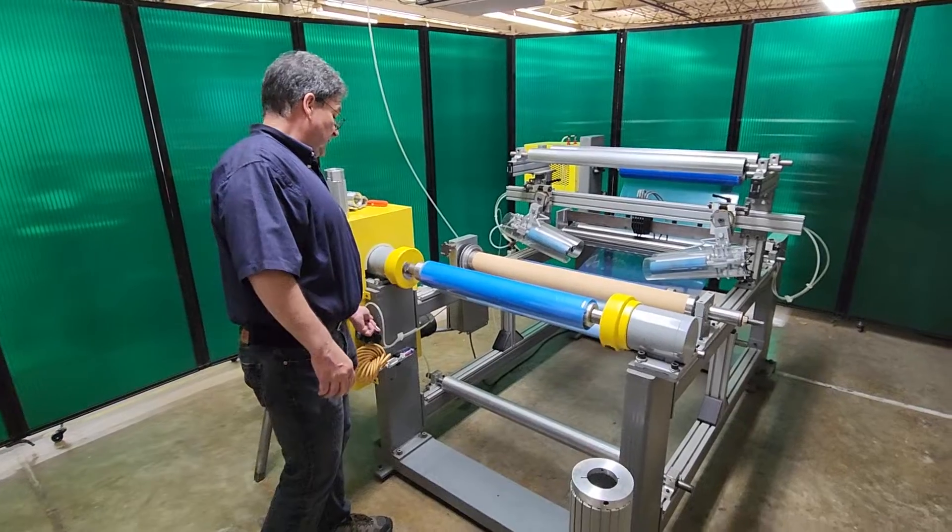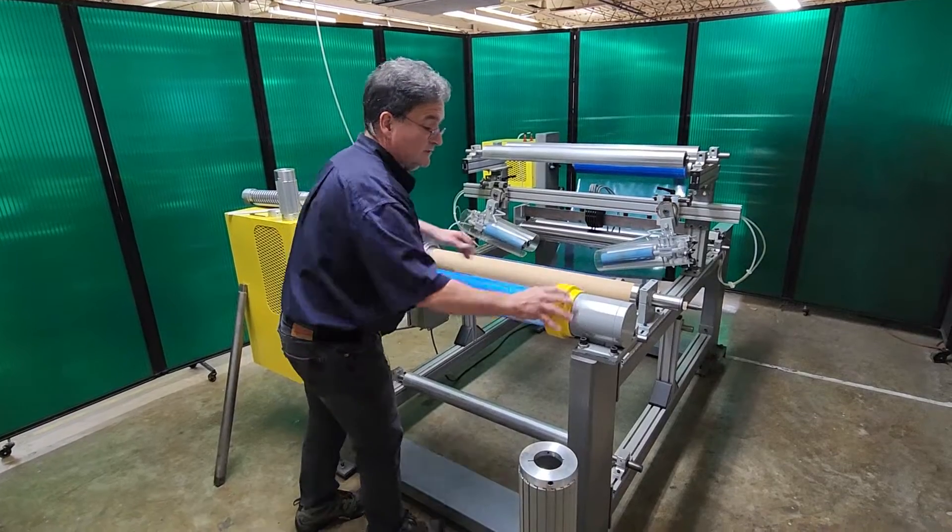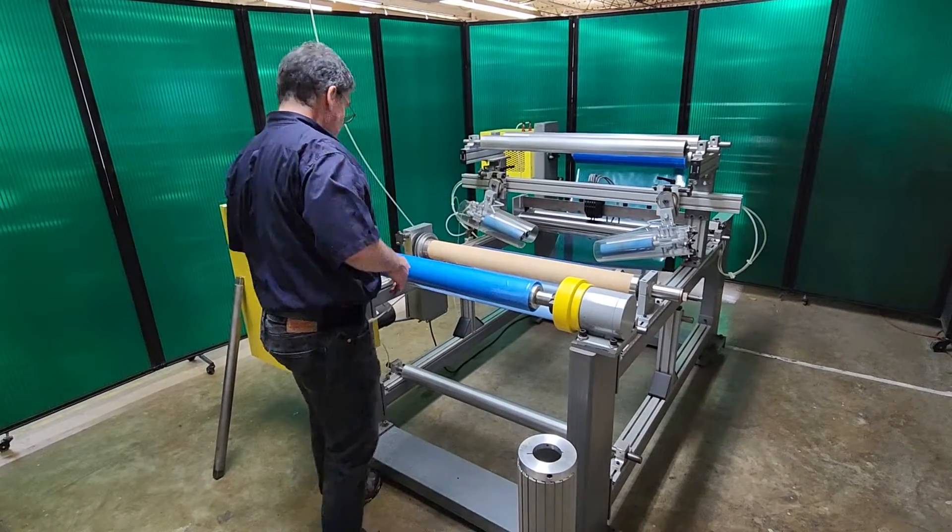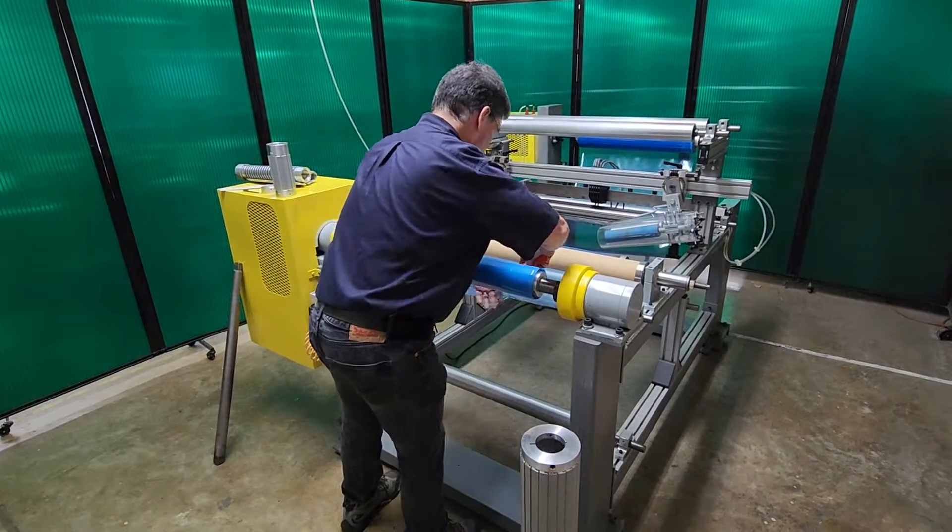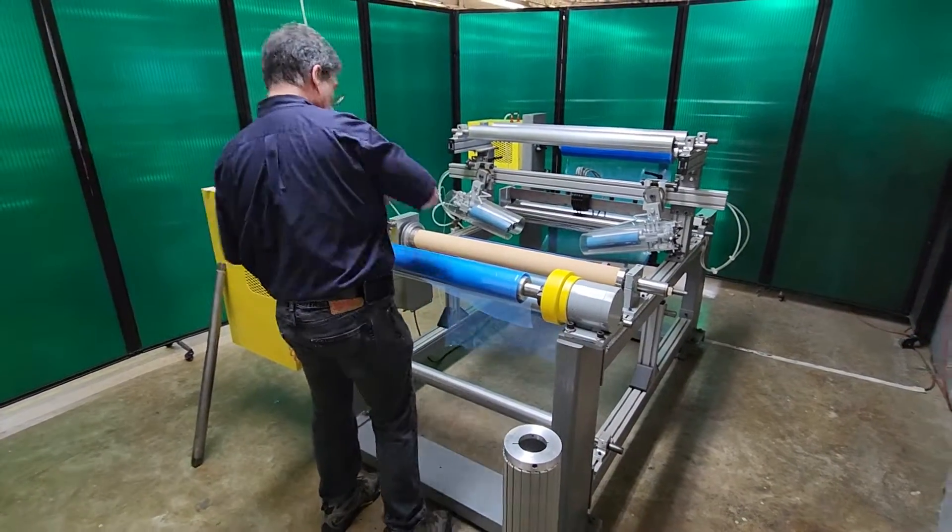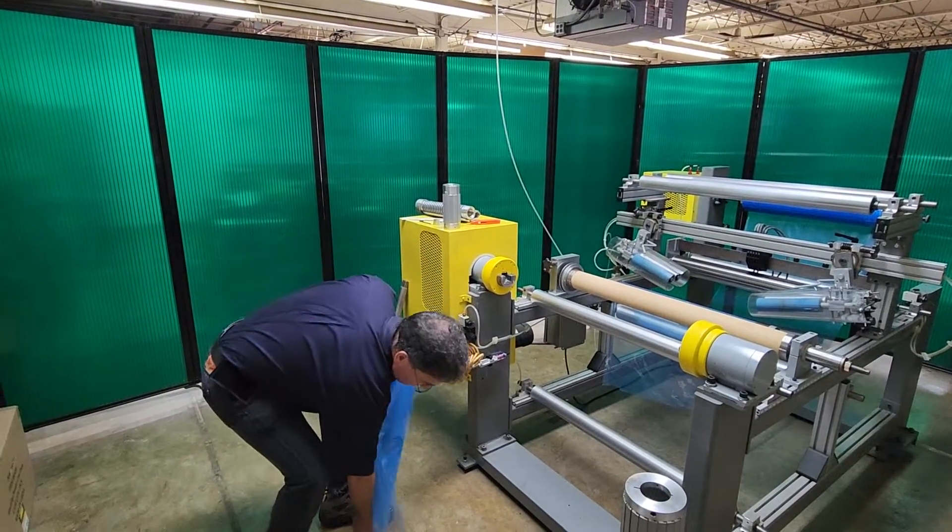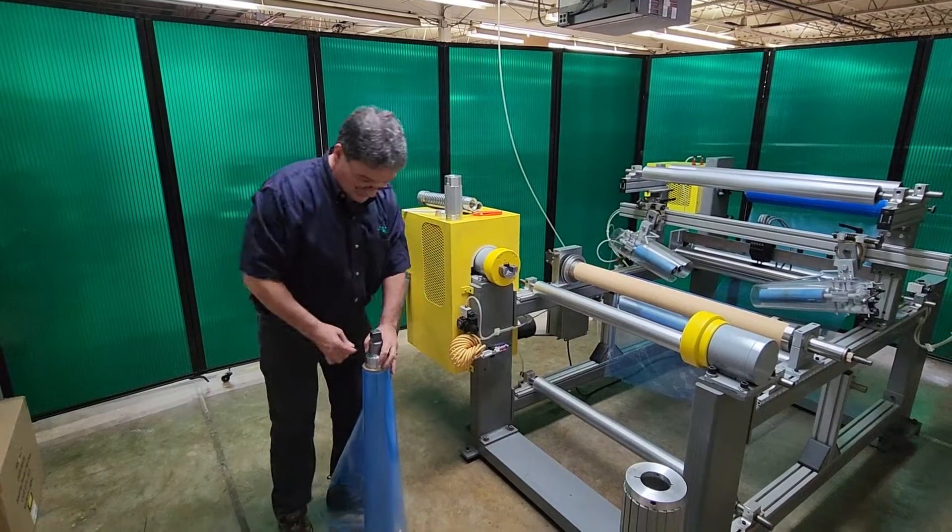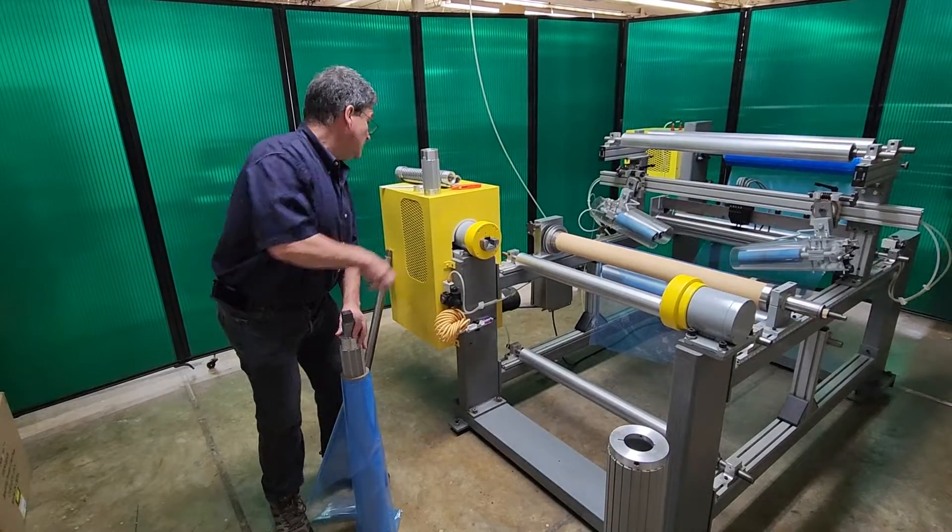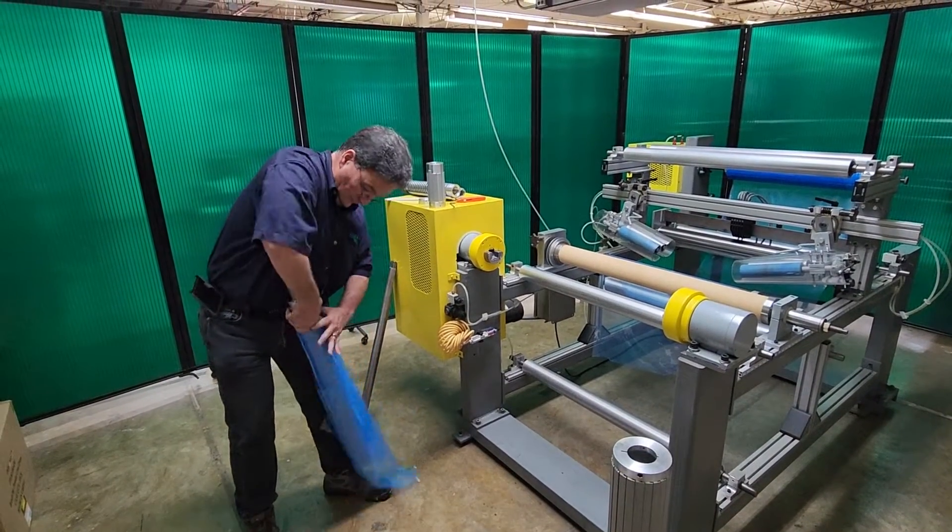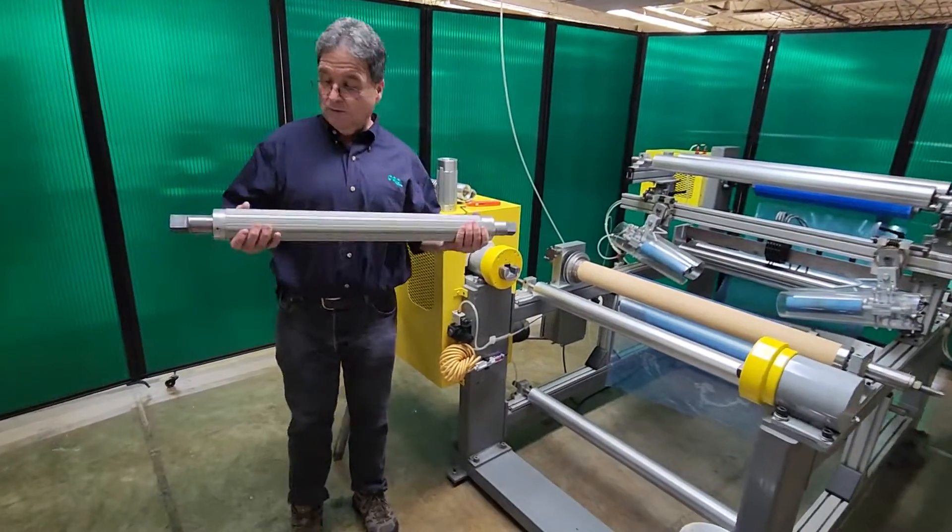When you want to take this, let's say that's a rewound roll of material, you open up your safety chucks, cut your web, pull the roll out and then deflate the air shaft and slide the air shaft back. That's how CAC's air shaft works.